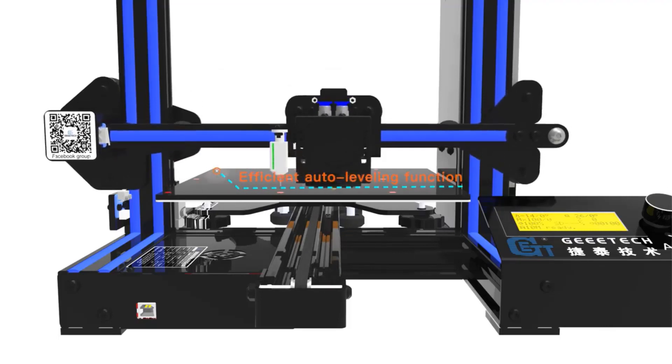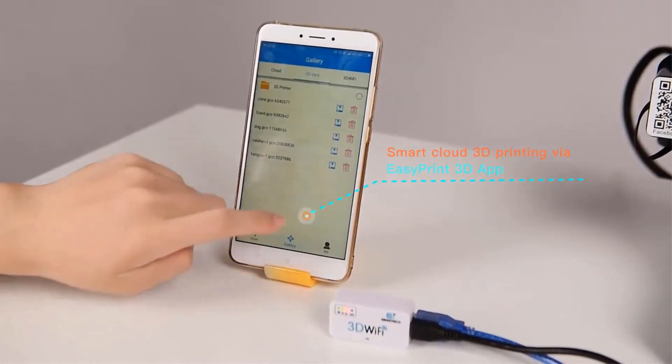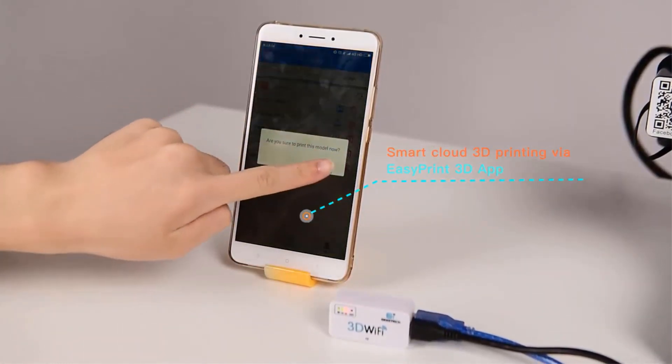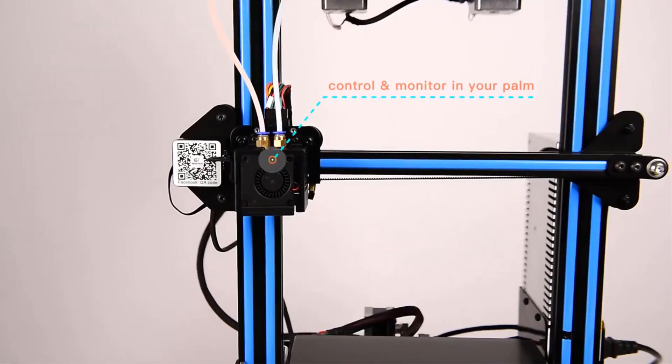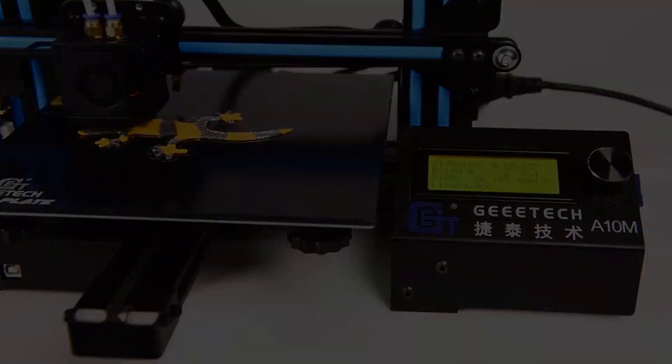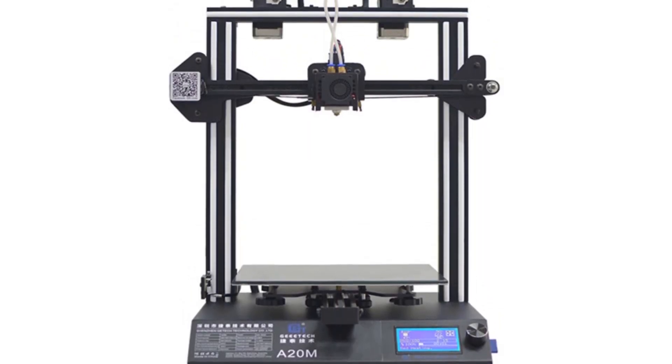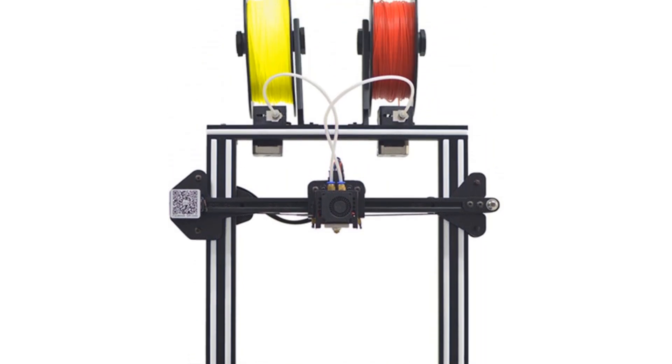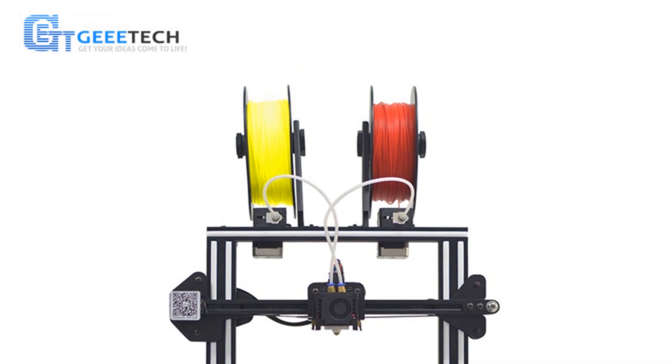The A20M features a housing design that provides stability and protection for the printer components. This sturdy construction ensures accurate and reliable printing results. Designed with a Prusa i3 Quick Assembly DIY Kit Upgrade, the A20M offers a user-friendly and straightforward assembly process. This feature makes it accessible to DIY enthusiasts who enjoy building their own printers and allows for customization and personalization.